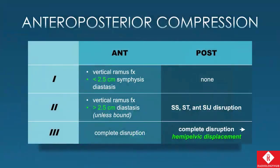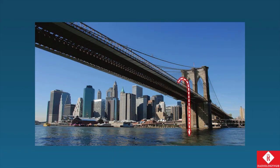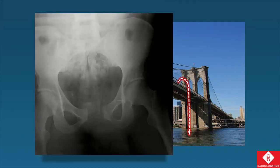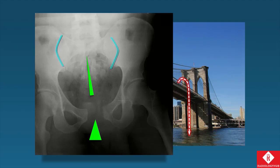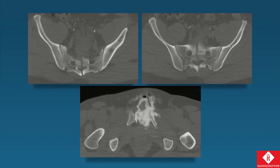In review of APC injuries: type 1 is limited to the anterior pelvis only — a stable situation. Type 2 adds pelvic floor ligaments and anterior SI joint disruption. Type 3 adds the posterior SI joint and hemipelvic displacement. Here's a case of somebody who jumped off the Brooklyn Bridge into the East River feet first — they did not keep their feet close together and blew open their pelvis, sustaining perineal injuries as well. We can see anterior SI joint widening, but instead of disrupting the SI joints, we have a vertical fracture going straight through the sacrum — an unusual but devastating injury.